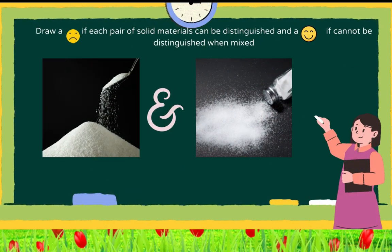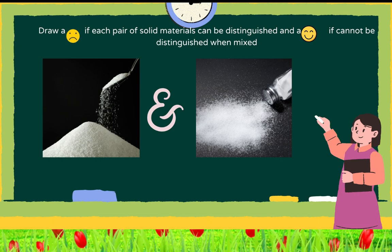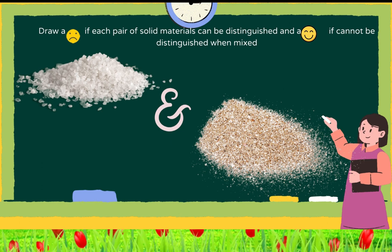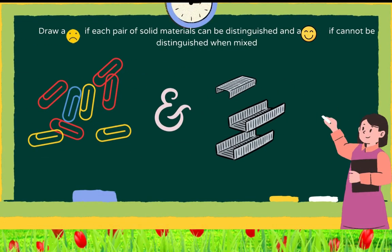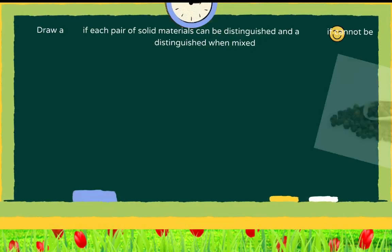Study each pair of pictures below and imagine that you mix them. Draw a happy face if each pair of solid materials can be distinguished, and a sad face if they cannot be distinguished when mixed. Number 1: Sugar and iodized salt. 2: Salt and sand. 3: Paper clips and staple wires. 4: Pepper and salt. And number 5: Powdered milk and flour.